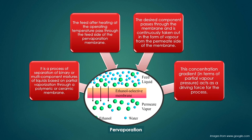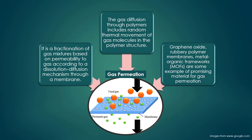Pervaporation is the separation of binary or multi-component liquid mixtures based on partial vaporization through a polymeric or ceramic membrane; concentration gradient expressed as partial vapor pressure acts as the driving force. Gas permeation is the gas diffusion process through polymers based on random thermal movement of gas molecules in the polymer structure; the gas mixture separates according to permeability via a dissolution-diffusion mechanism through a membrane. Graphene oxide, rubbery polymer membranes, and organic frameworks are promising materials for gas permeation.